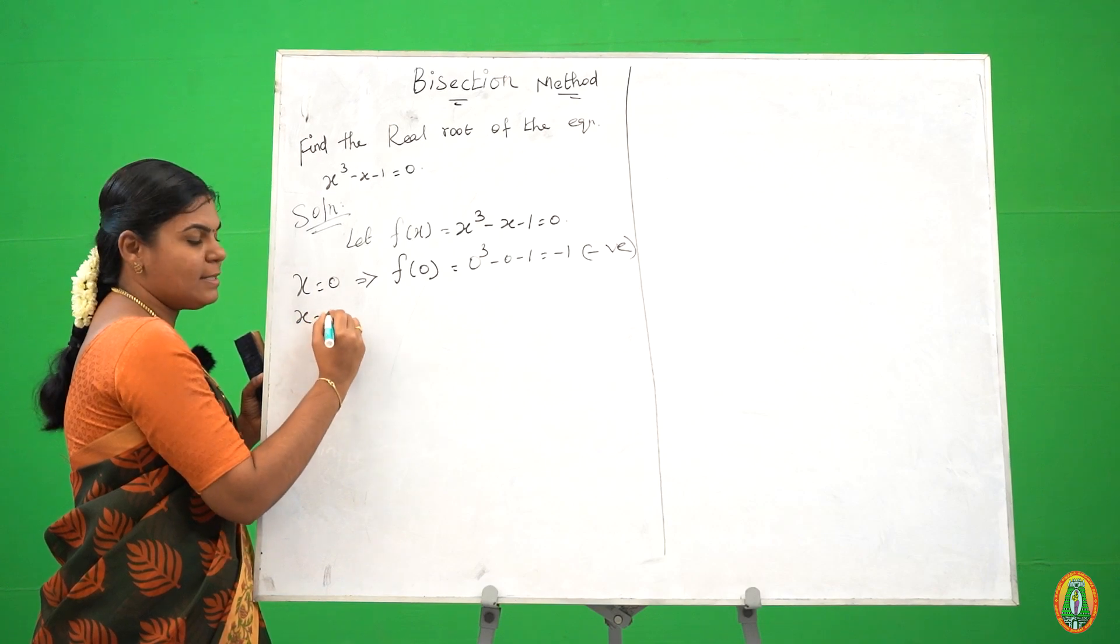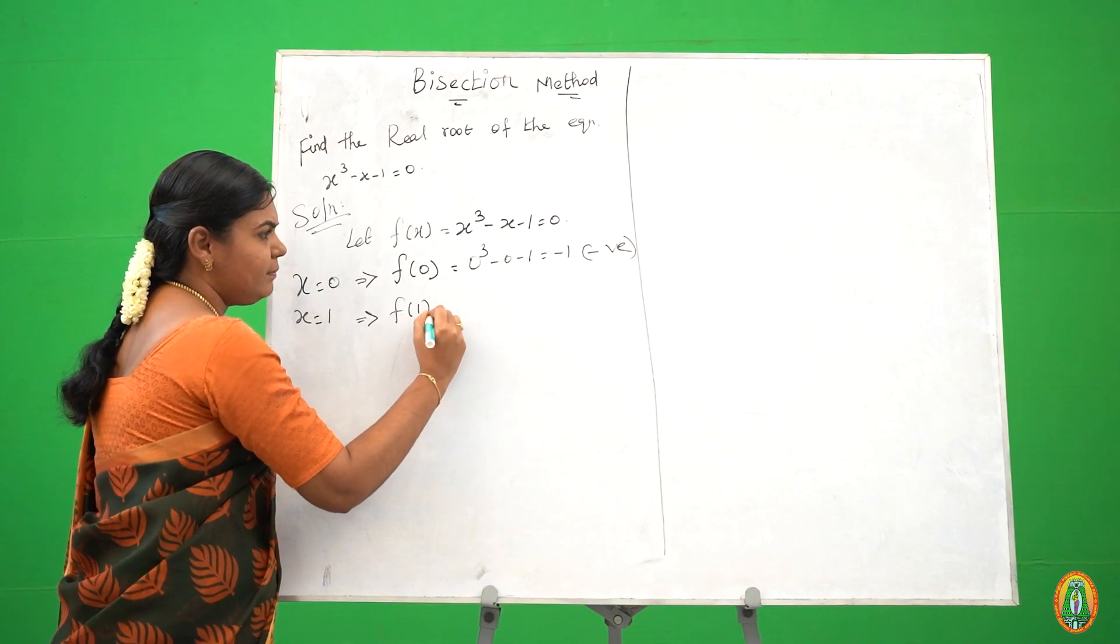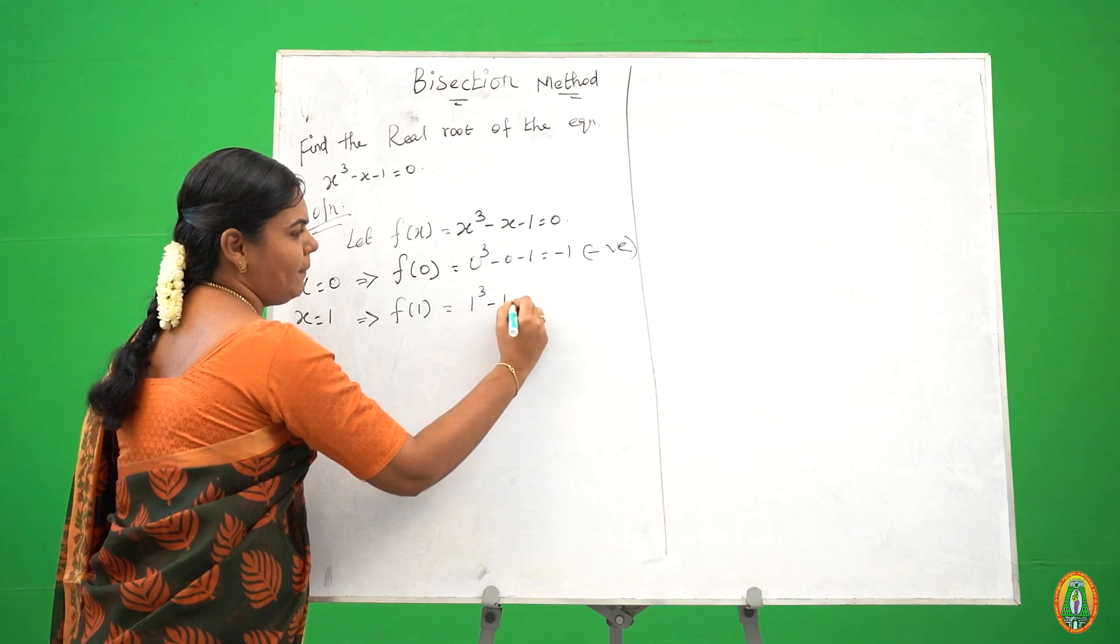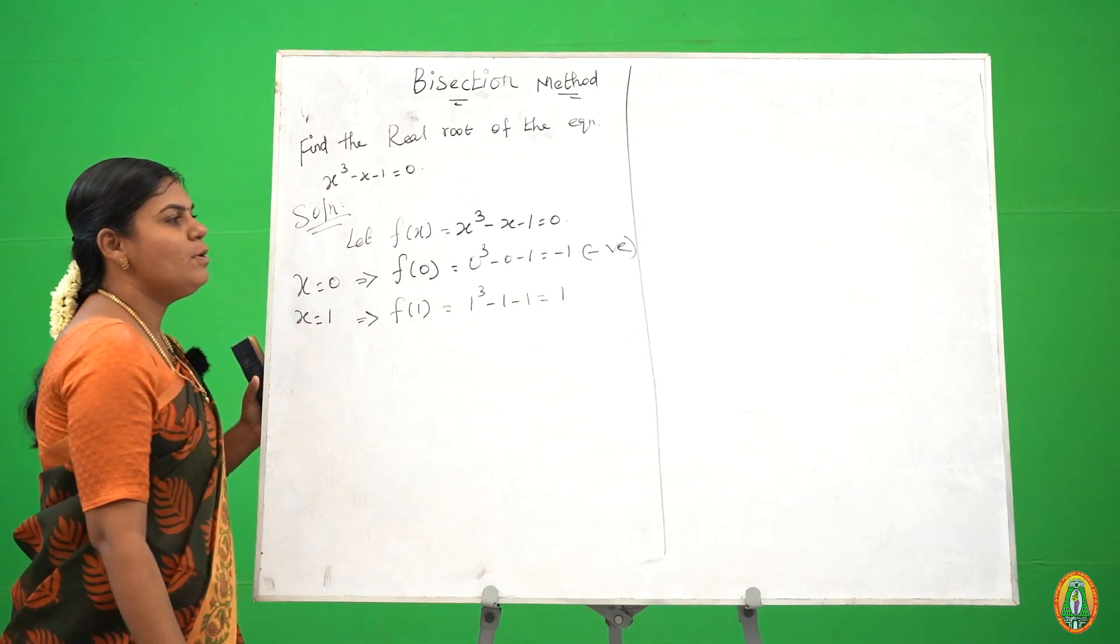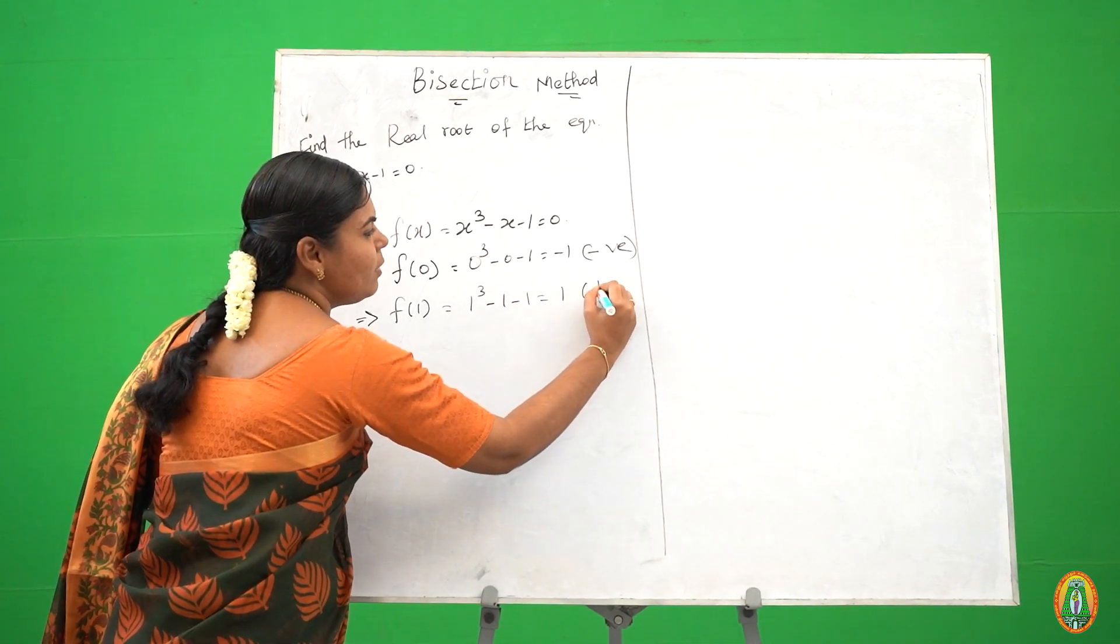So next we take x is equal to 1. So f of 1, the value is positive. We get a positive value.